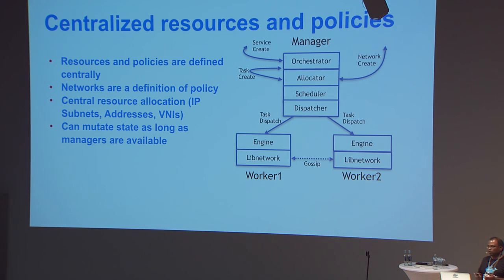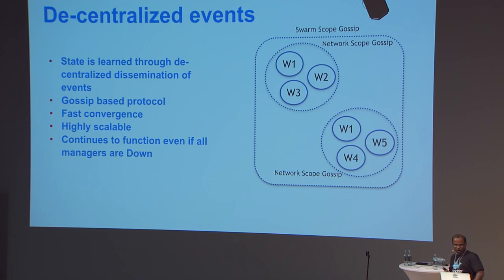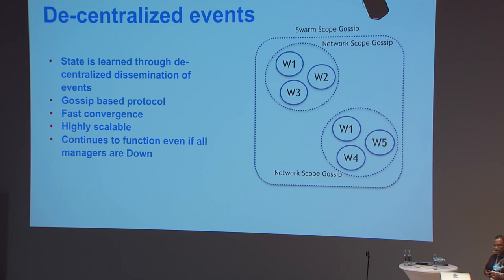What I'm going to talk about in more detail is the decentralized part of networking — this is what we call the network control plane. Before going into exactly what this is, I want to provide some information on why we did not choose some other routing protocol like BGP.